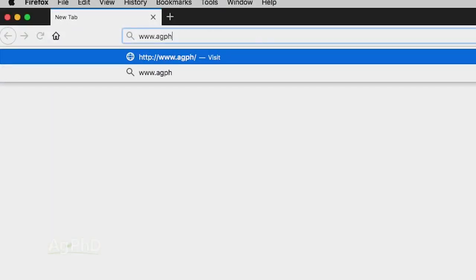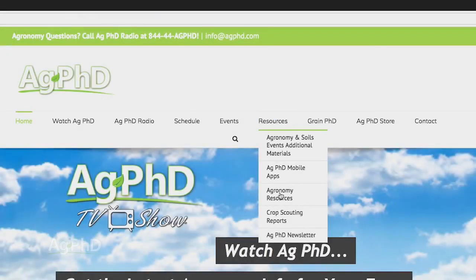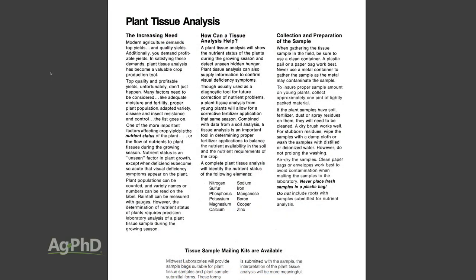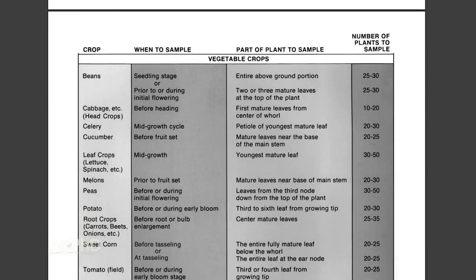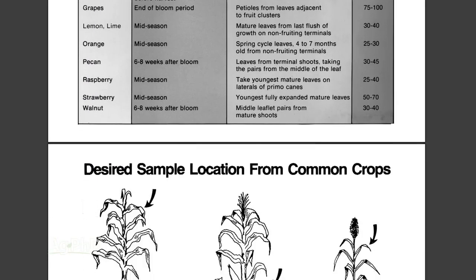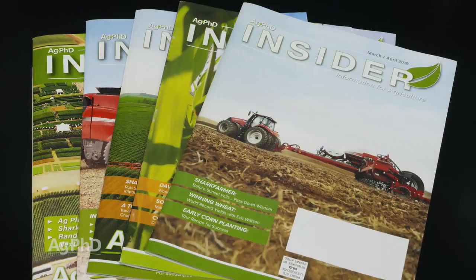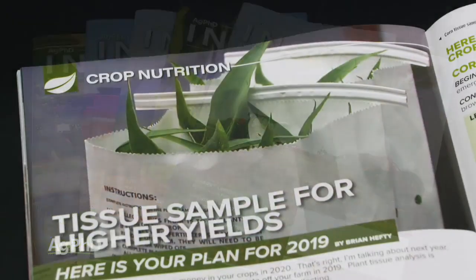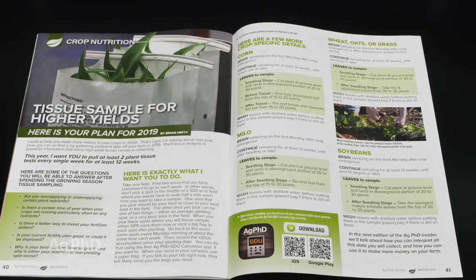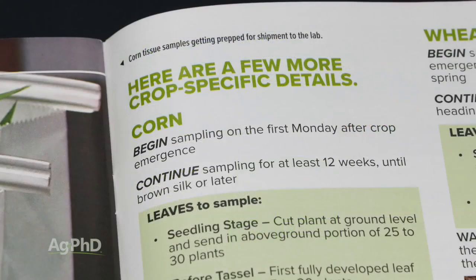If you need a quick handy reference, you can go to our website at agphd.com and click on the resources tab. You'll find a plant tissue analysis guide with a number of different crops. If you've got a different crop than corn or soybeans, you can still use plant tissue analysis to find out what's going on nutritionally. Also, in the Ag PhD Insider magazine, we talk about plant tissue analysis on a fairly regular basis and show what we're working on and learning.